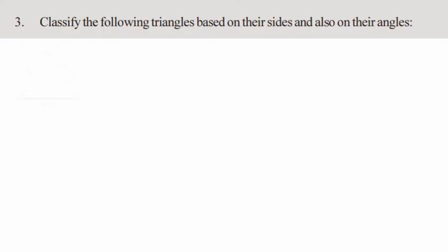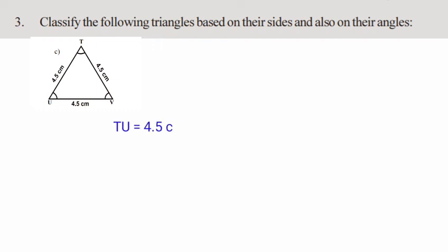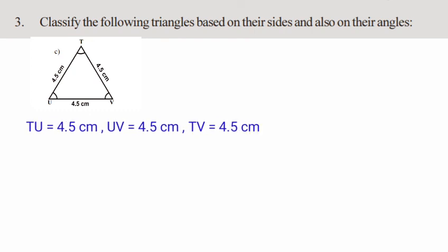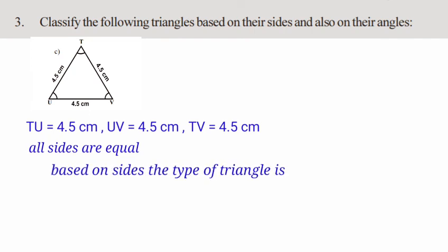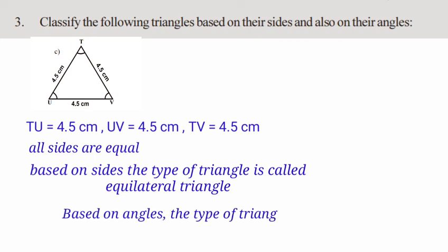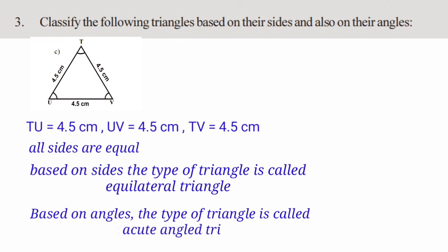Next, problem 3C: triangle TUV. Side TU is equal to 4.5 cm, side UV is equal to 4.5 cm, side TV is equal to 4.5 cm. All sides are equal, so based on sides the type of triangle is an Equilateral Triangle. In an equilateral triangle all angles are acute, so based on angles the type of triangle is called an Acute Angle Triangle.